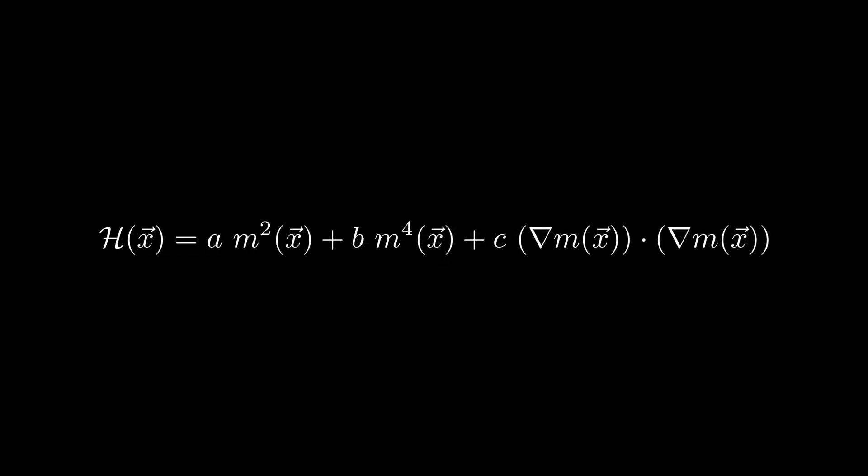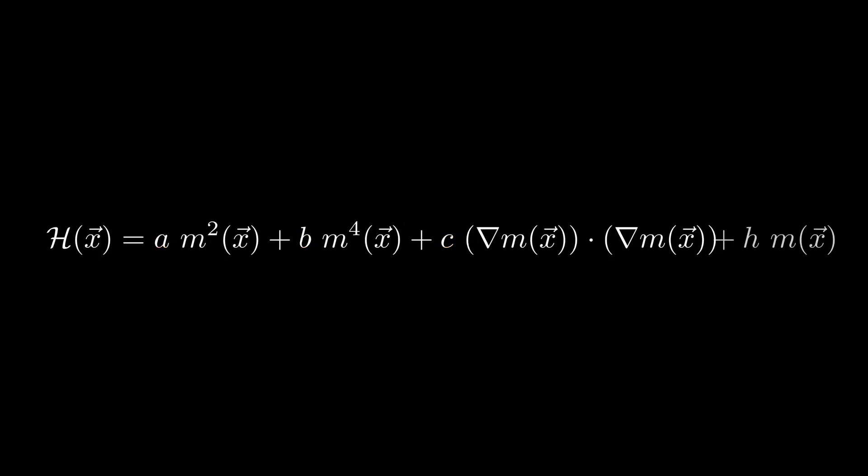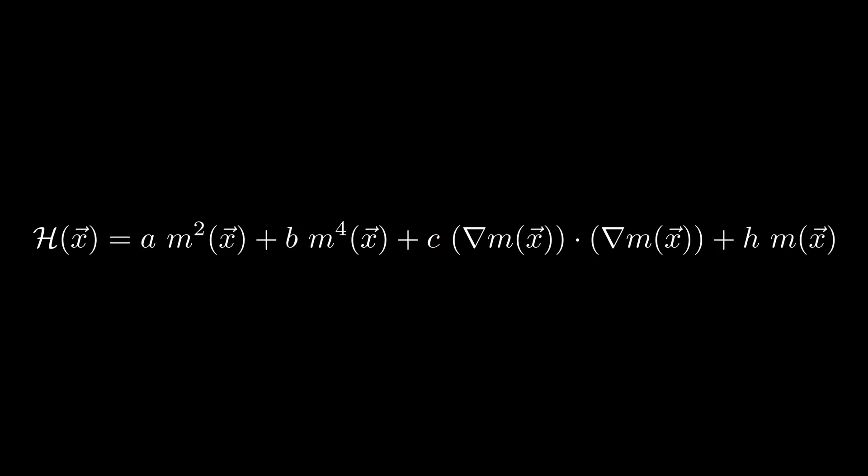A commonly used example, which happens to be a fairly good model for how metals such as iron become magnetized, looks like this. This might look complicated, but we don't really need to know what it means. The relevant point is that it is a sum of a few terms, each of which is some function of our state variable m of x, which again, for a magnet, represents the magnetization of the material at each point, and each of which has some coefficient in front of it. The sizes of these coefficients is what determines the energy the system has in different states, and the resulting behavior of the system overall. Adding in additional terms adds additional behavior to the system.